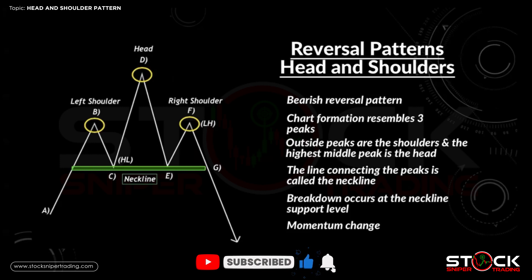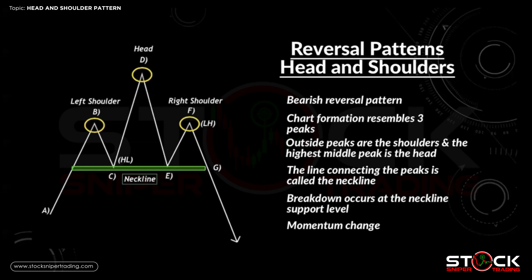On the diagram you can see letter A — we have some bullish buying momentum as price action increases to where we get to B, which creates our left shoulder. We encounter some resistance and sellers push the price down to C, which creates our neckline support level and also creates a higher low from A. Now buyers come into the market and push the price up to D where we encounter selling pressure again as we make a new resistance level, and price action pushes back down to E where we test our support level again.